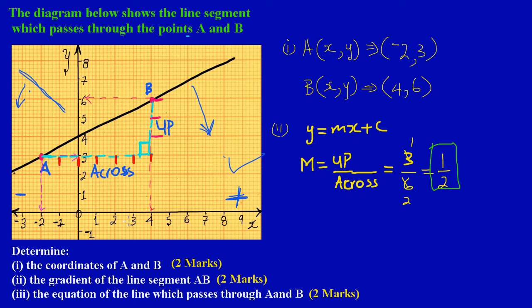Now quickly, let's conclude question 6b part 3. They're asking us here for the equation of the line which passes through the points A and B.